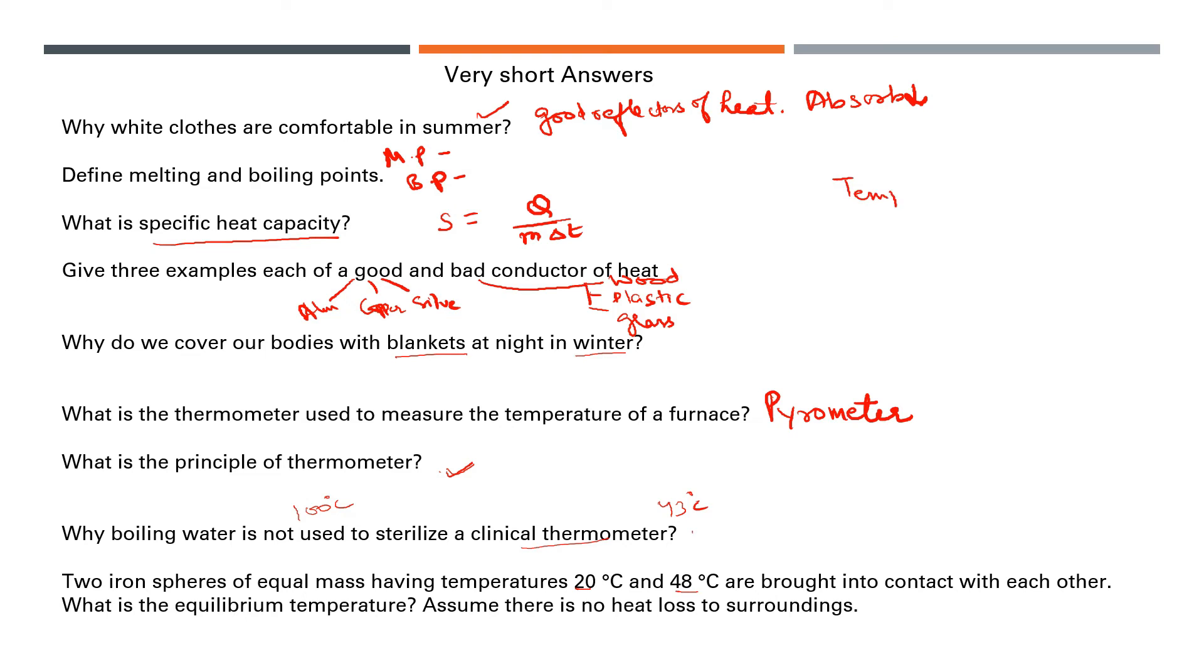It will break because the maximum temperature of a clinical thermometer is 43 degrees centigrade, and boiling water is 100 degrees centigrade. Two iron spheres of equal mass having temperature 20 degrees and 48 degrees are brought into contact. What is the equilibrium temperature? Temperature of first sphere T1 is 20, temperature of T2 is 48 degrees. Equilibrium temperature will be T1 plus T2 divided by 2, which is 20 plus 48 by 2, which will come to 34 degrees centigrade.